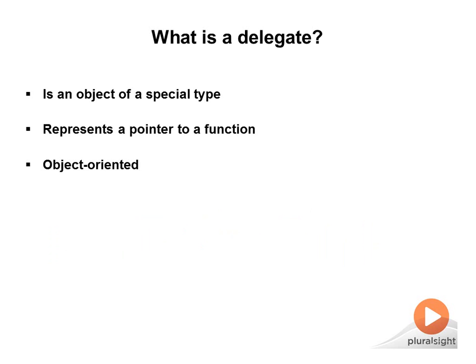However, a delegate is not a raw function pointer. It is encapsulated within an object of a special class named delegate, which you will find in the system namespace. Unlike a raw function pointer, a delegate is type-safe, in that it cannot point to an invalid memory address and can only point to a method. It does not expose the raw memory address it is pointing to, and you cannot have it point to anything except a method.